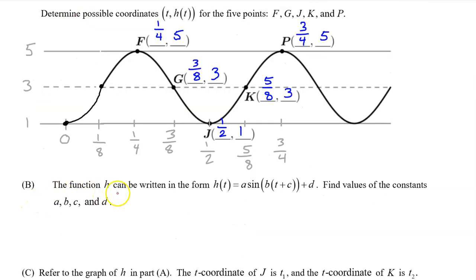Part B. The function h can be written in the form h of t is equal to a times the sine of b times t plus c plus d. Find the values of the constants a, b, c, and d. We have memorized that the parent function y equals sine t looks like this. So let's highlight a period of h of t that looks like this. Let's build a model for h of t based on this period of h.